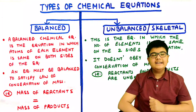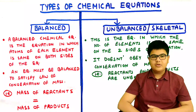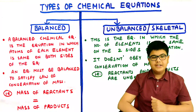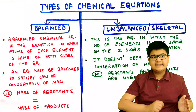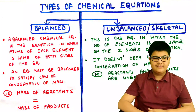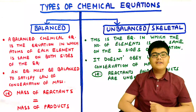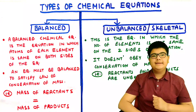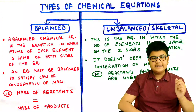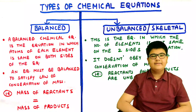An unbalanced or skeletal equation is one in which the number of atoms on the reactants and product sides is not equal. It does not obey the law of conservation of mass, meaning the mass of reactants and products is unequal.